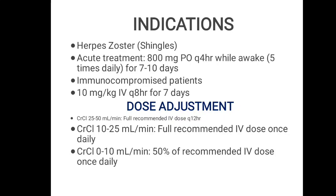With creatinine clearance of 25 to 50 ml per min, full dose IV is recommended every 12 hours. With creatinine clearance of 10 to 25 ml per min, full dose is recommended. With creatinine clearance of 0 to 10 ml per min, 50 percent of the recommended IV dose is given once daily — meaning the dose should be reduced to half.